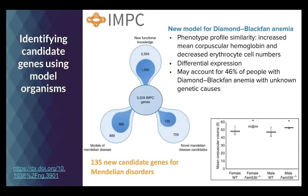Using this cross-species approach we can also identify new candidate genes using model organisms. In collaboration with the IMPC, we identified 135 new candidate genes for Mendelian disorders described in OMIM that lacked a known causal mechanism. One example is a new model for Diamond-Blackfan anemia, where phenotypic profile similarity for increased mean corpuscular hemoglobin and decreased erythrocyte cell numbers enabled fuzzy phenotypic matching — and this variation may account for as many as 46% of Diamond-Blackfan anemia cases with otherwise unknown genetic causes.